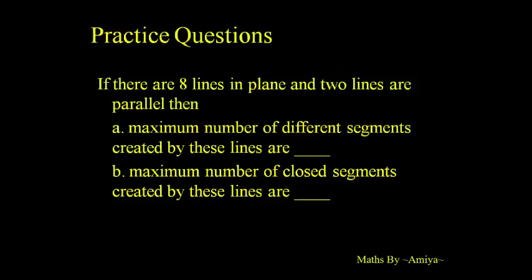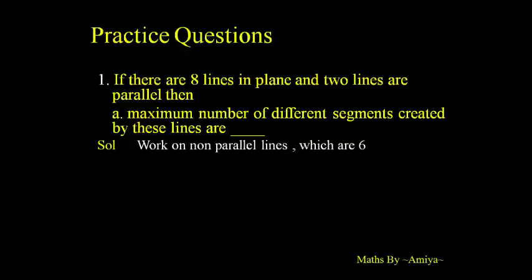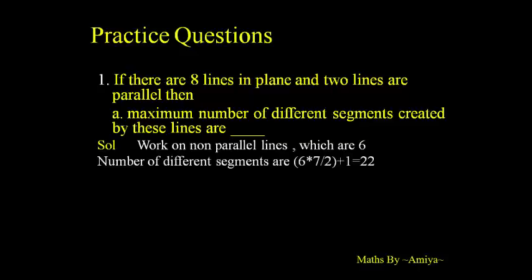Practice question 1: there are 8 lines in a plane and 2 lines are parallel. Find the maximum number of different segments and maximum number of closed segments. First, work on the 6 non-parallel lines: σ6 + 1 = 6×7/2 + 1 = 22 regions. Then for the 2 parallel lines, each creates 7 new segments (6 non-parallel + 1 = 7), giving 2×7 = 14 new regions.